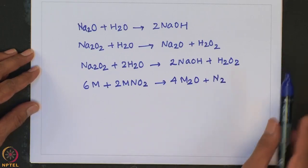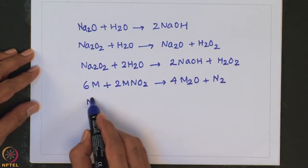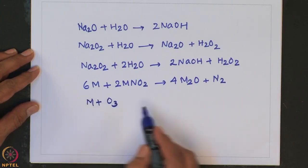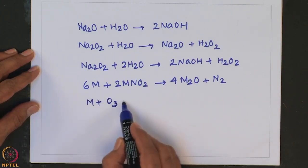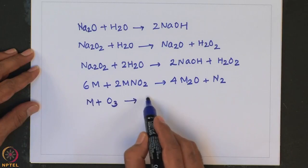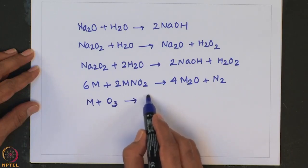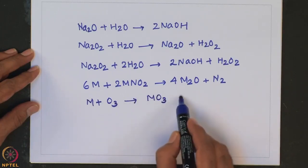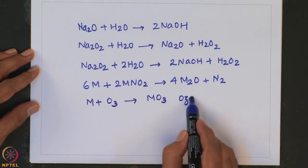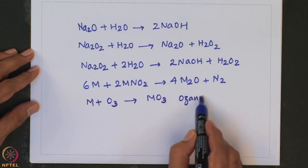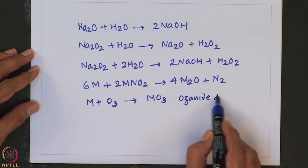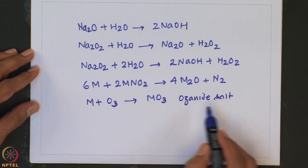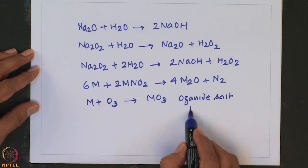Alkali metals also react with ozone to form ozonate salts. These ozonate salts are paramagnetic in nature.